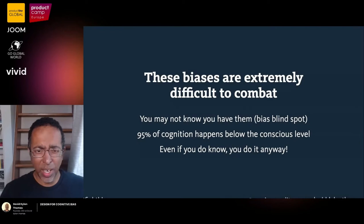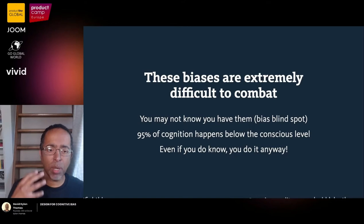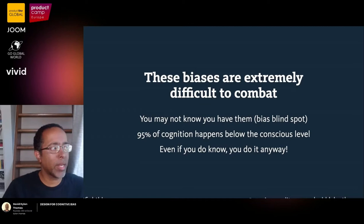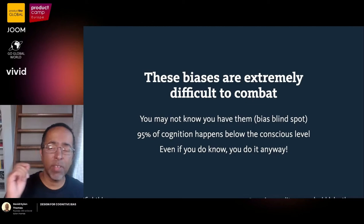Part of the problem fighting these biases is you may not even realize you have them. There's literally a bias called the bias blind spot, where you think you don't have any biases but you're sure everybody else does. About 95% of cognition happens below the threshold of conscious thought, so we're making these decisions so quickly we don't even realize we've made them. Even if you know about the bias, you'll probably still do it anyway.